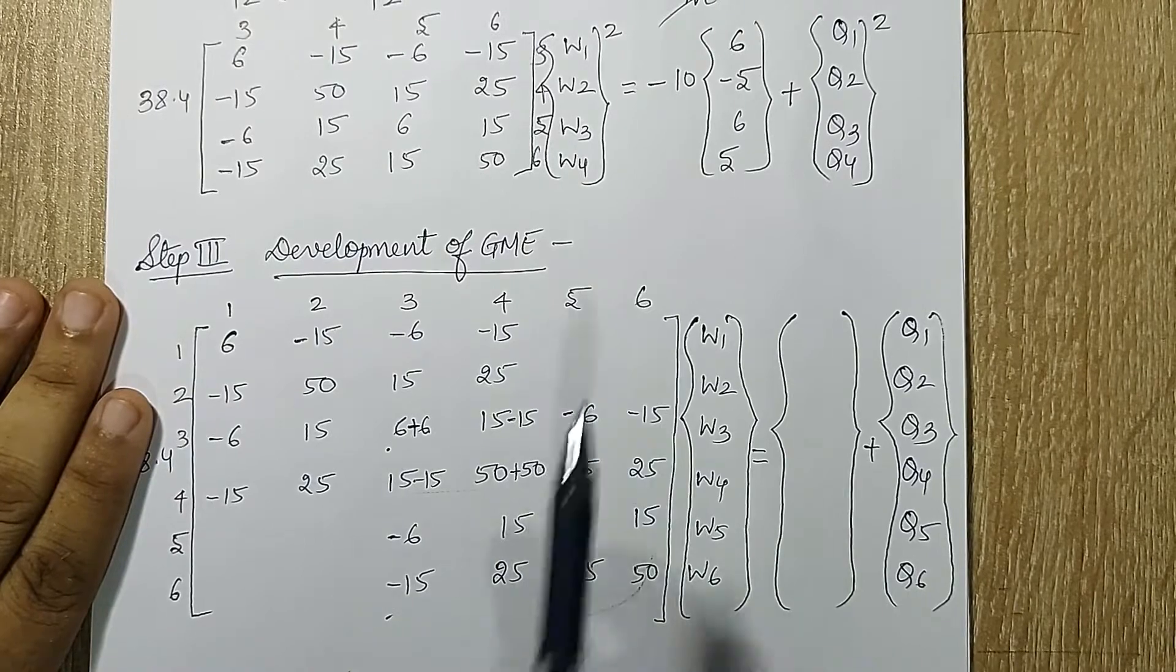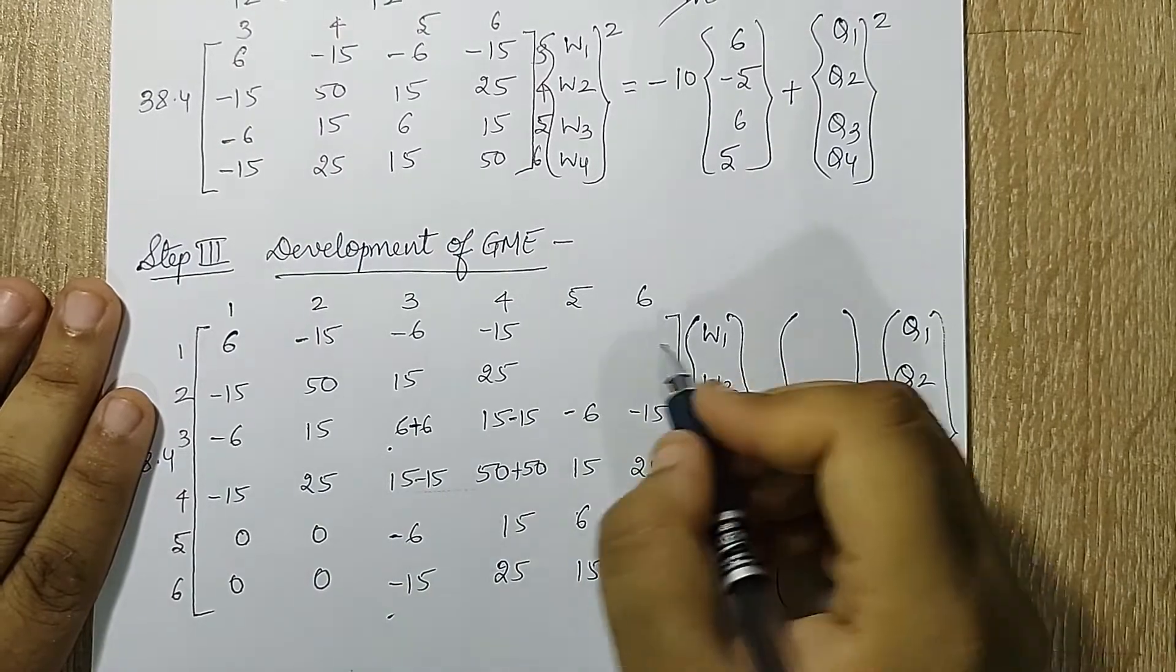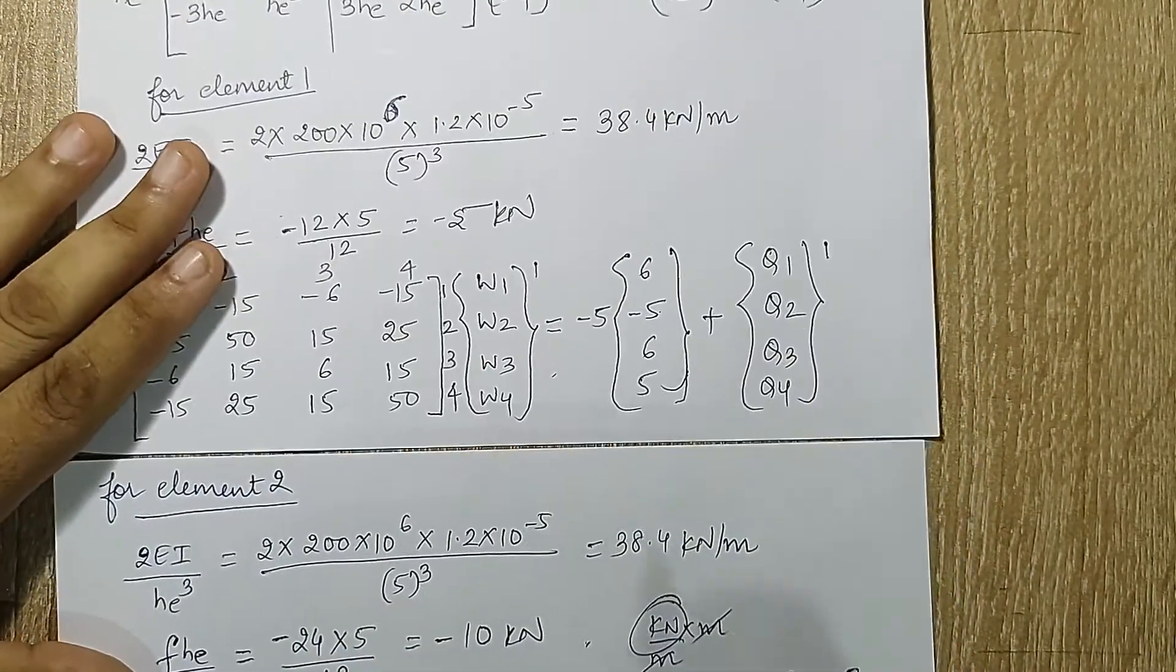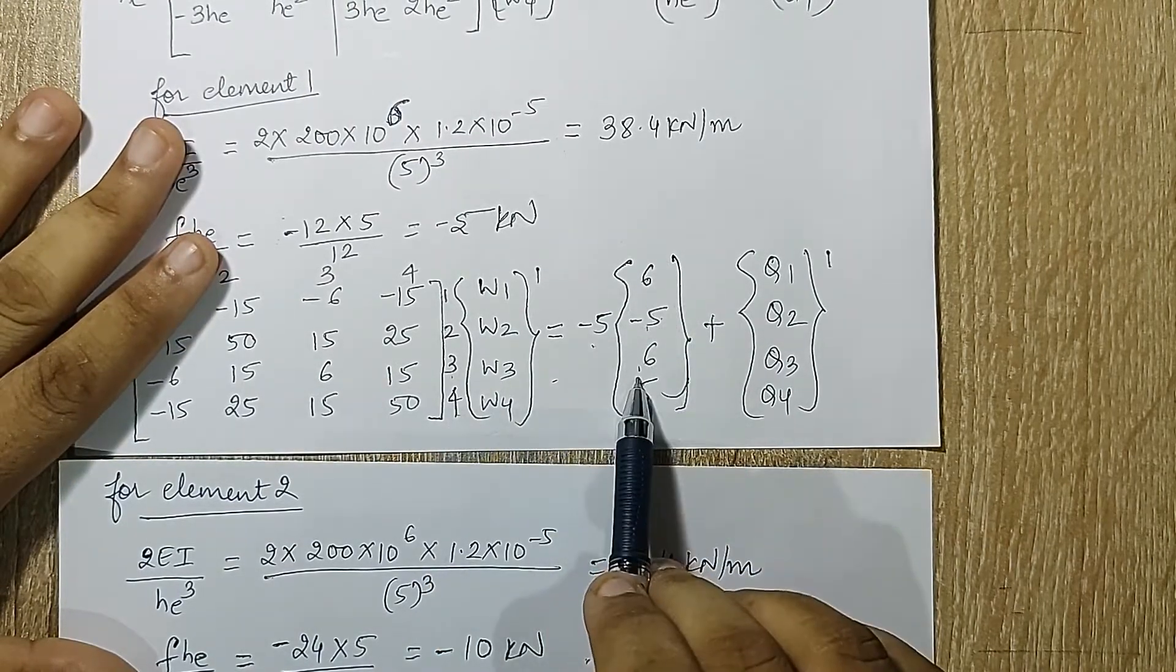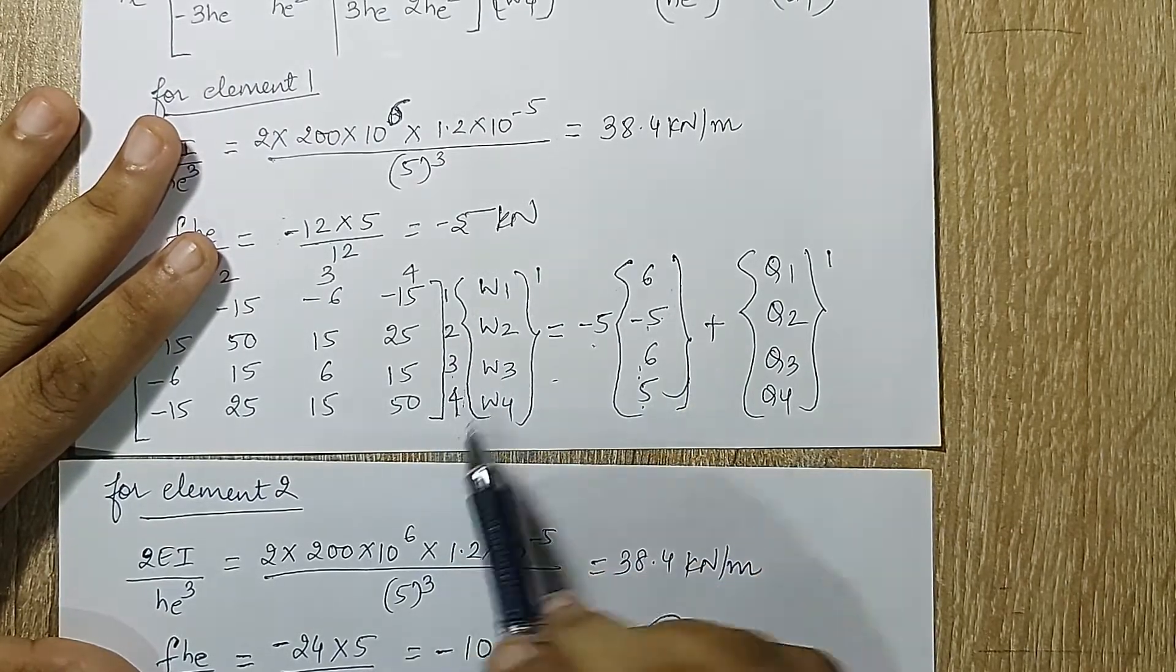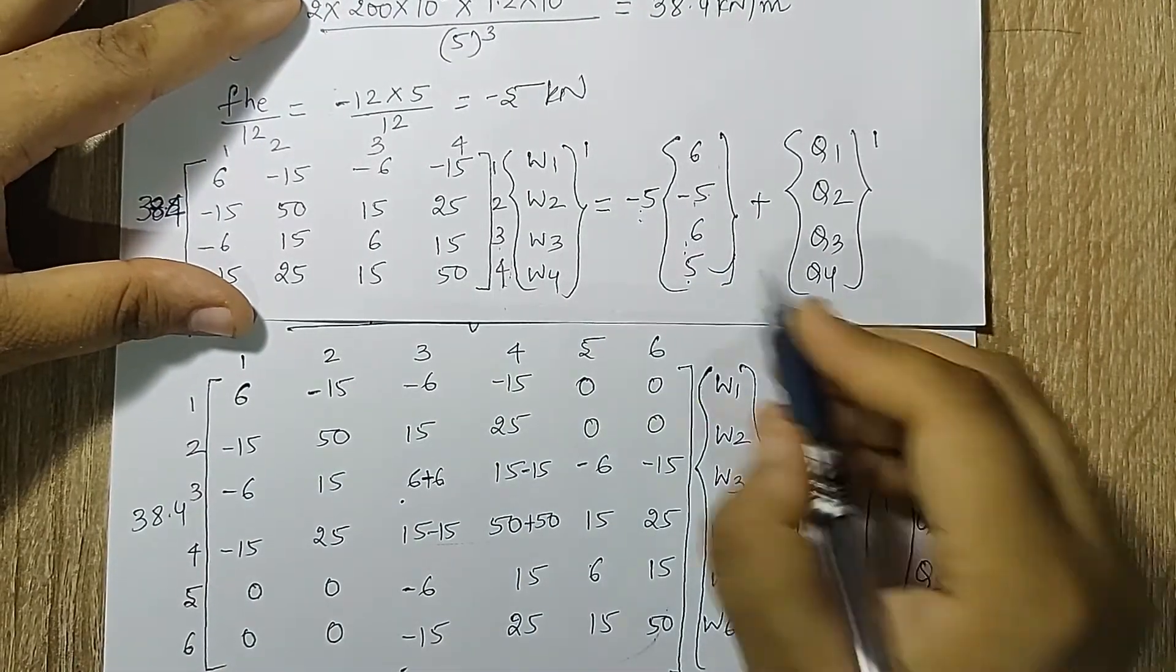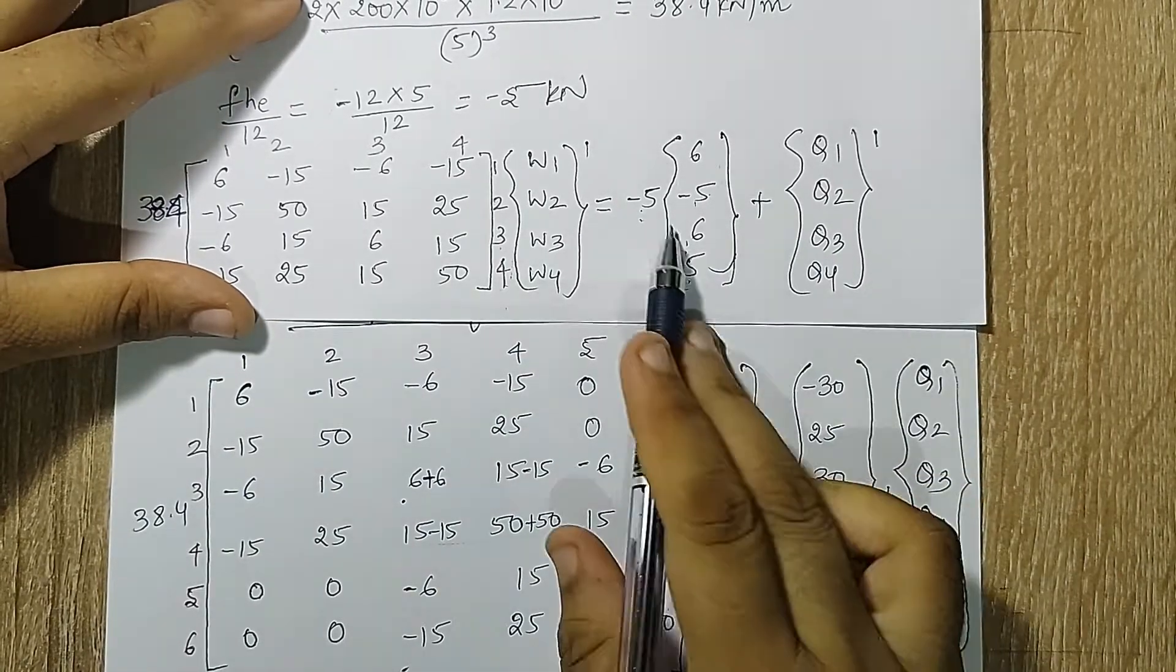Now this is the matrix. I'll fill up these values as 0 because there's no element between 1,5, 1,6, 2,5, 2,6. Now here placement is very important. These 4 values are at 1,2,3,4 position. This minus 5 has to be multiplied with each of them, get a complete number and place them at 1,2,3,4. So I will get at position 1 this is minus 30, this is 25, this is again minus 30 and minus 25.